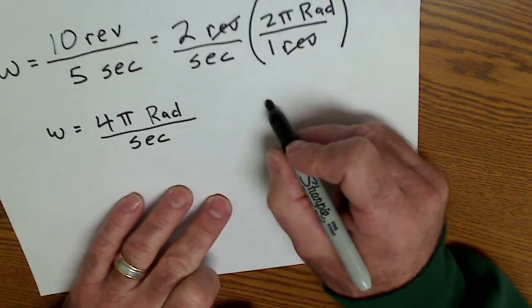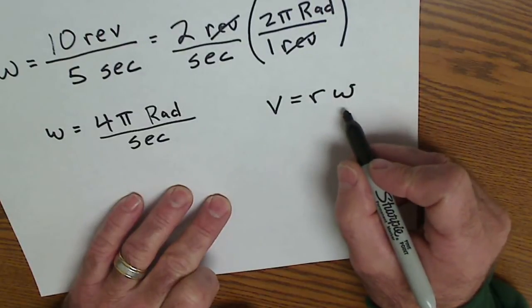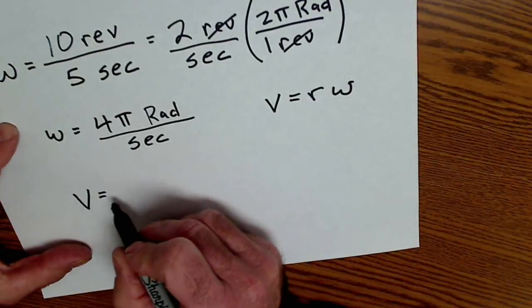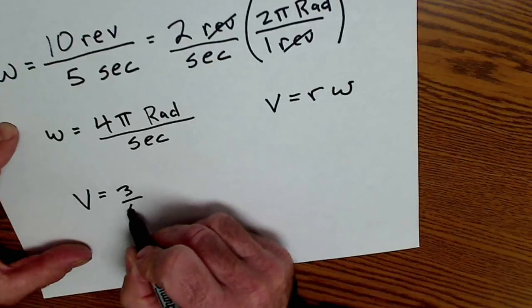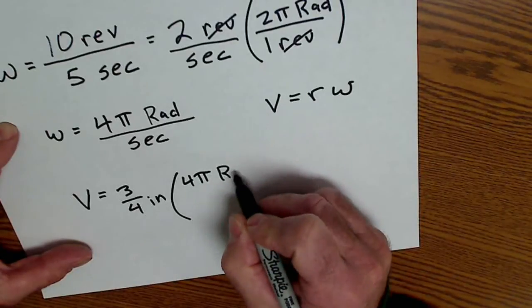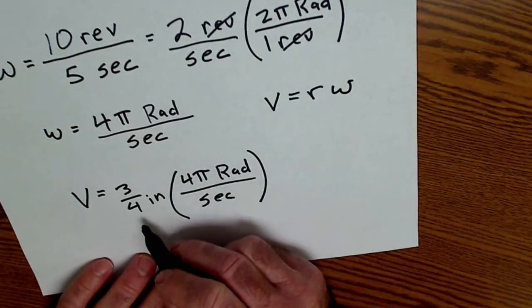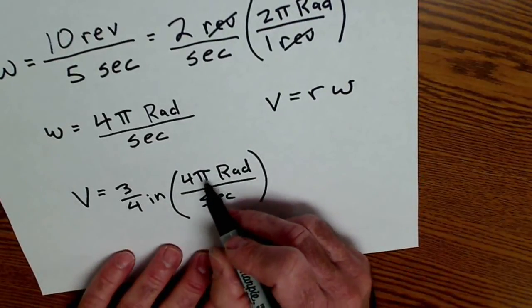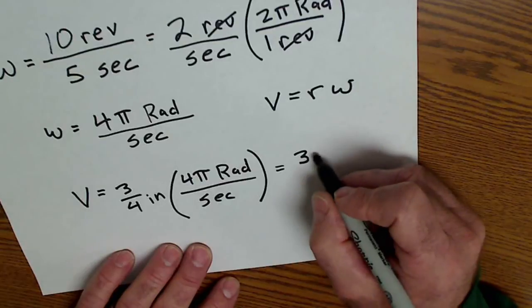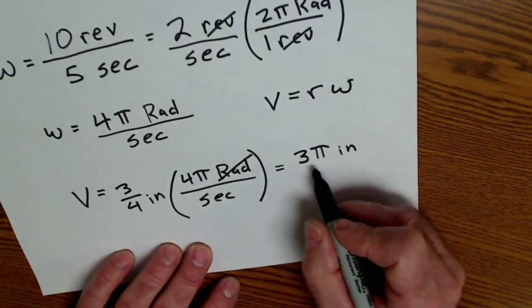Our equation, again, was linear velocity equals radius times angular velocity, where angular velocity is in radians. So what's the linear velocity of the outside edge of that top? The linear velocity is equal to its radius, three quarters of an inch, a distance, times its angular velocity, four pi rads per second. Three quarters times four is three pi. So three quarters times four is three. Still have the pi. Radians drops out because it's really just a placeholder. And this is inches per second.